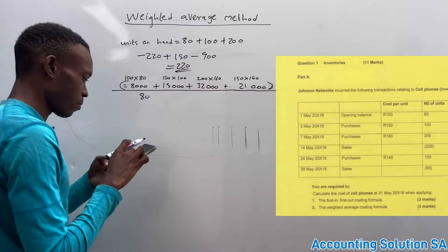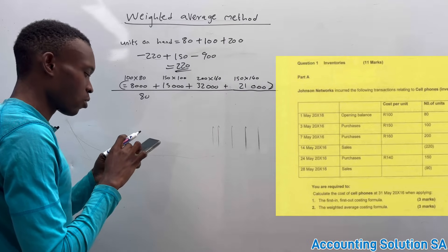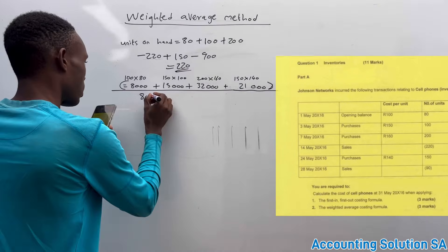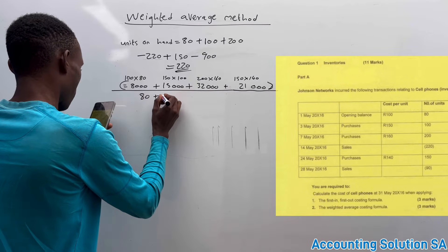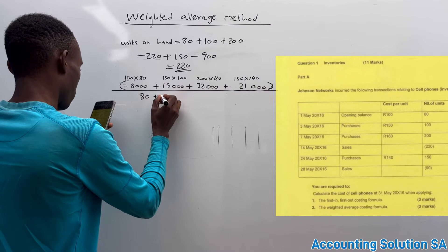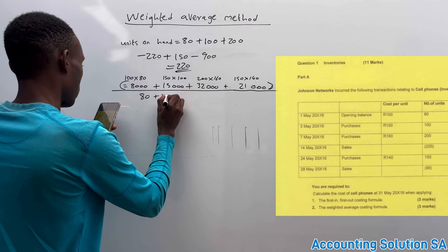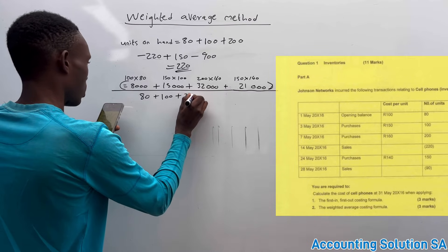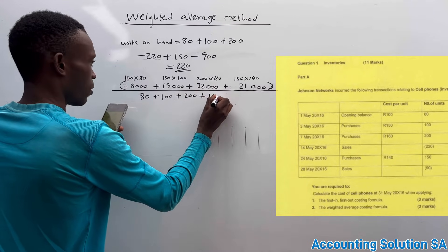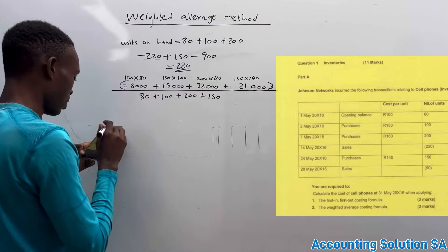Let me go back to those units. Don't include the units of sales. 80 plus 100 plus 200 plus 150. And let me calculate this.